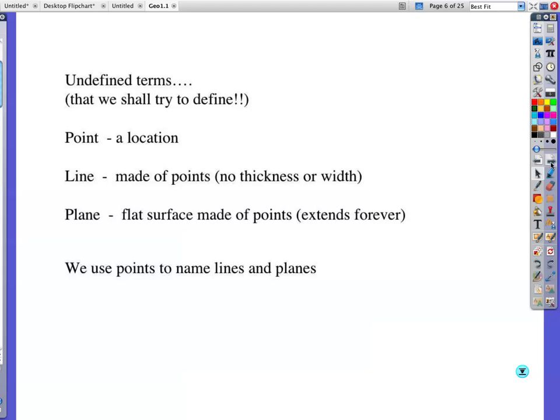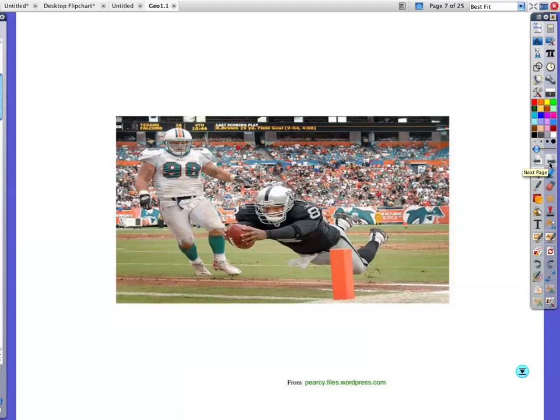And we use points to name the lines and planes. We all pretty have a good idea of what a point and a line is. But the ceiling, we describe as part of the plane. Since it's football season, I always give this example, too. What is the definition of a touchdown? It's when the ball crosses the plane of the end zone.